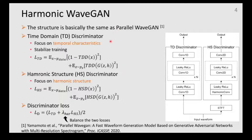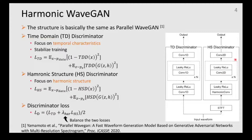The TD discriminator is the same as the discriminator used in PWaveGAN, and it also plays a role in stabilizing the training of the model. The HS discriminator aims to capture the harmonic structure. Harmonic convolution is inserted in the first layer of the discriminator, followed by two-dimensional convolutional layers.